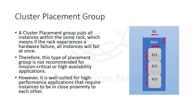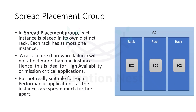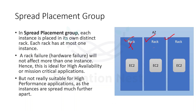To overcome this, we have the spread placement group, where each instance is placed on a distinct rack — at most one instance per rack for that particular application. So even if one rack goes down, we have instances running on other racks to handle requests. This is best for high availability or mission-critical applications, but it is not suitable for high-performance applications because instances are spread far apart on different racks, causing latency issues.